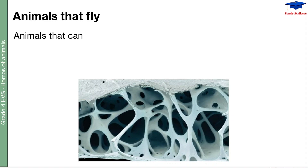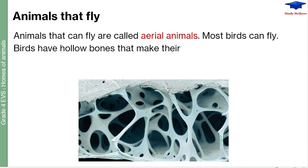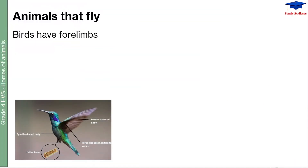Animals that can fly are called aerial animals. Most birds can fly. Birds have hollow bones that make their bodies light in weight and help them to fly. You can see here that the bird's four limbs are modified as wings, it has a feather-covered body, hollow bones, and a spindle-shaped body.